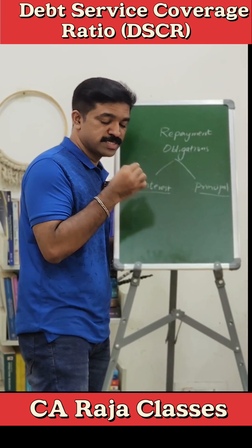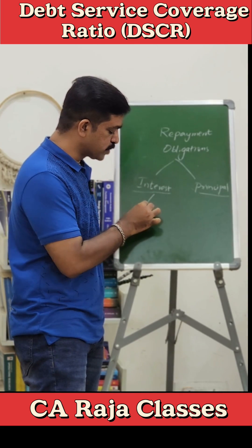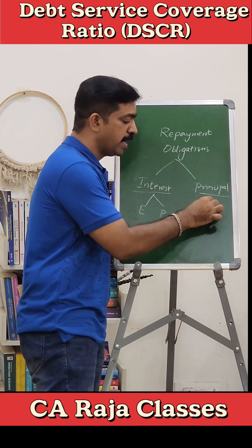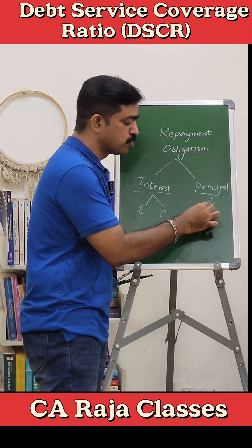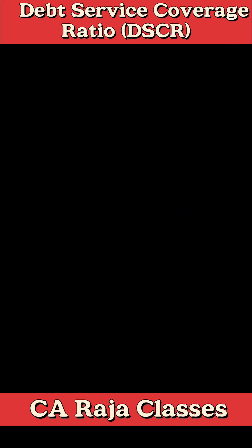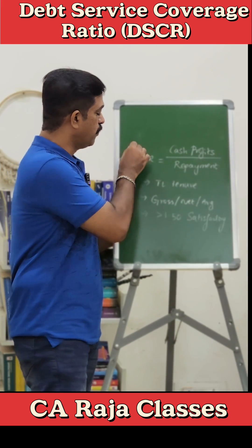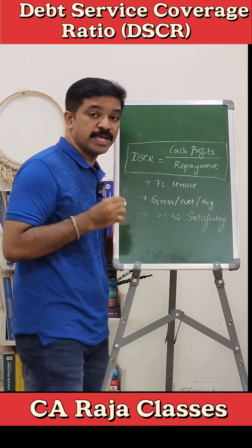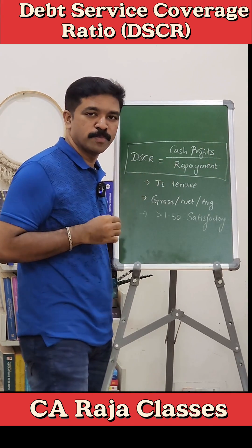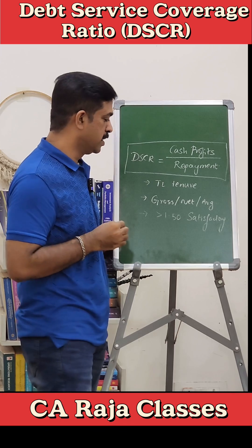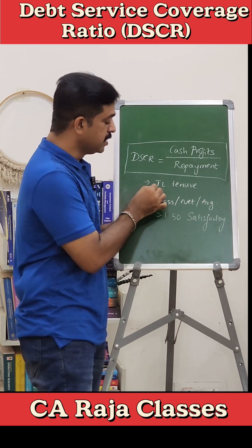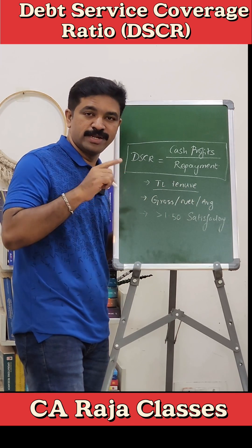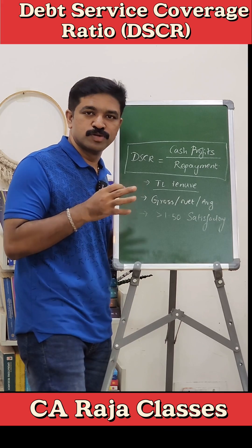When we say interest, it includes both interest on the existing loan as well as the proposed loan, and principal also covers both existing and proposed. So the formula is: DSCR equals cash profits divided by repayment obligations. This DSCR has to be calculated for the entire term loan tenure.